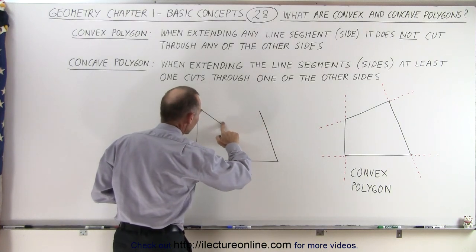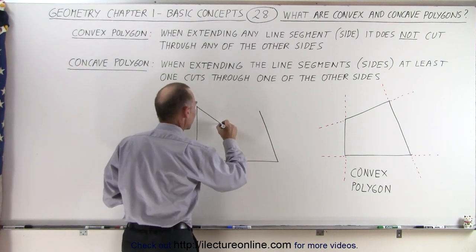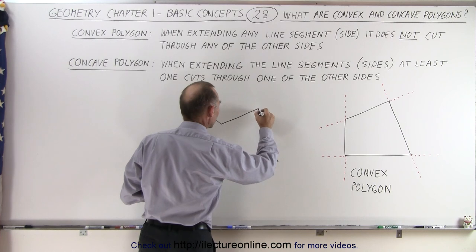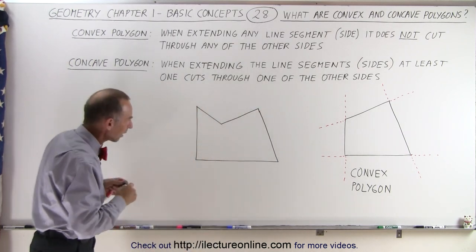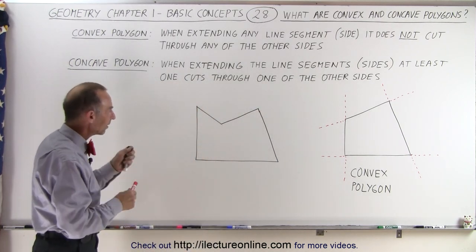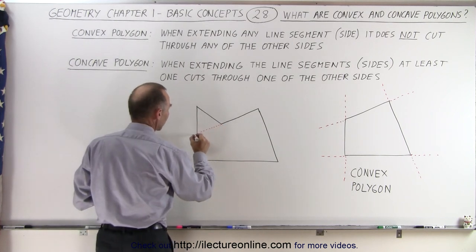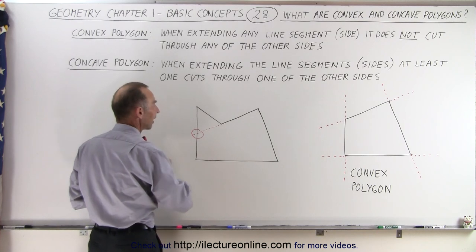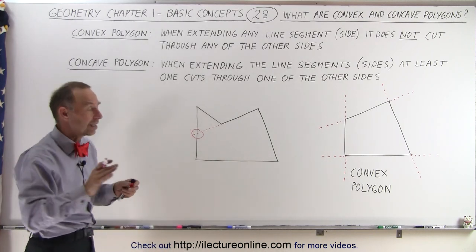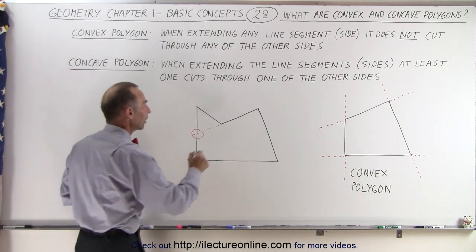I'm going to redo this side here because I want this to be a straight line. It doesn't quite look like a straight line, so there we go. So now it looks a little bit more like a polygon. And let's extend that side, and notice what happens. I extend it, and here it is. It cuts through another side. That alone is enough to say this is now a concave polygon.